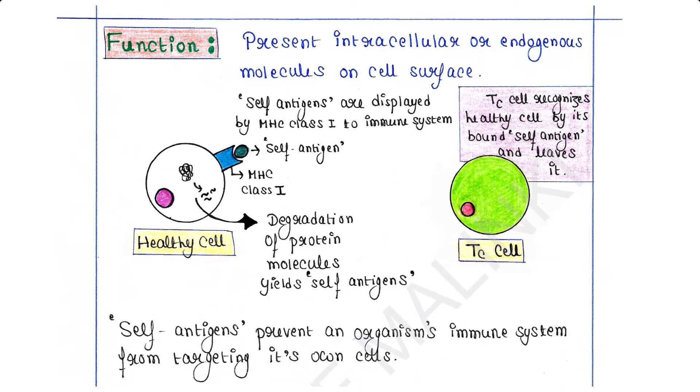Class 1 MHC molecules present intracellular or endogenous molecules on cell surface. In our body, each and every healthy cell works continuously, and its protein molecules are continuously synthesized and degraded. Those degraded protein products are bound to the cell surface MHC Class 1 molecules and displayed to the immune system of our body. These degraded protein products are called self antigens.